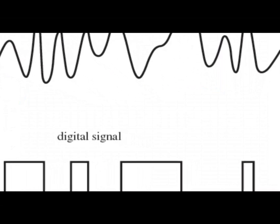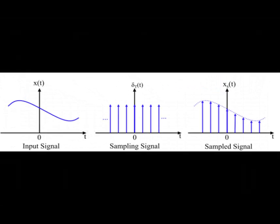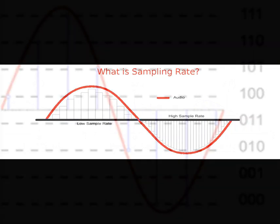The first step in the ADC process is sampling. The continuous analog signal is sampled at regular intervals to capture its amplitude at those specific points in time. The rate at which these samples are taken is known as the sampling rate, typically measured in samples per second. Each sample taken is then assigned a digital value through a process called quantization.